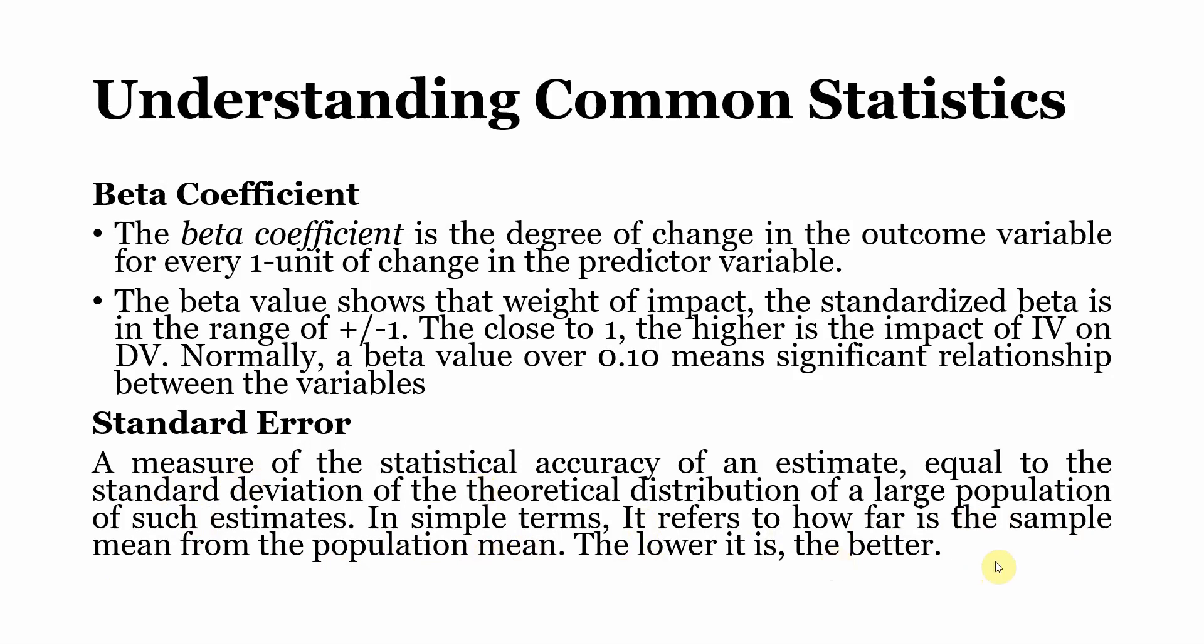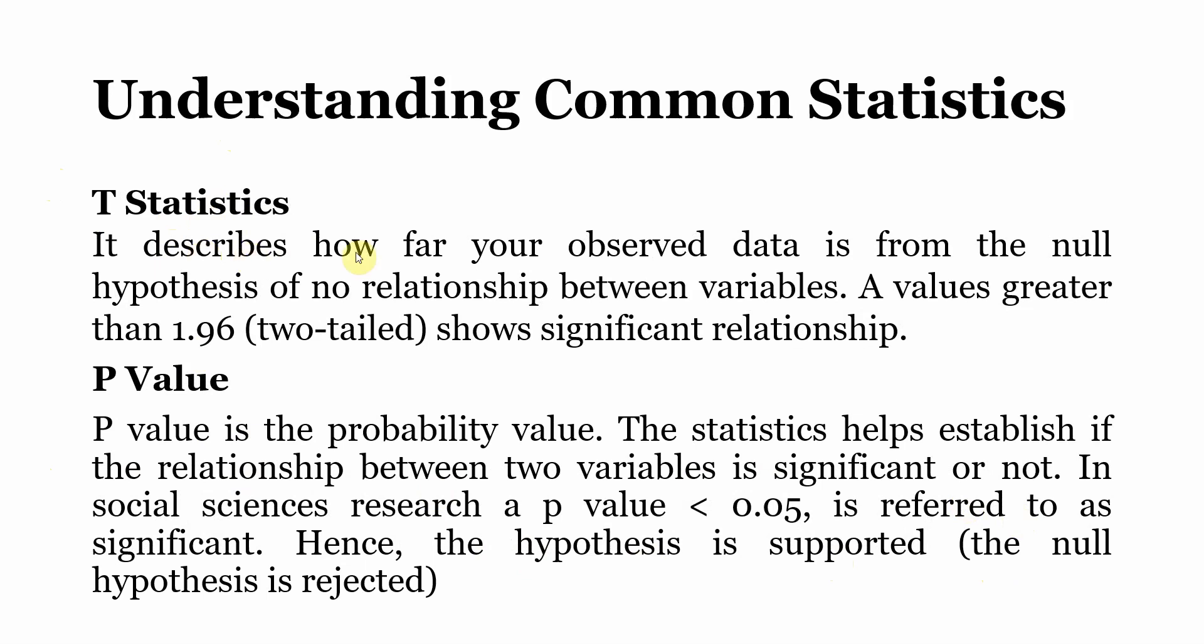Now if you divide your beta coefficient by your standard error, you will get your t statistics. And t statistics describe how far your observed data is from the null hypothesis of no relationship. Now a value of greater than 1.96 will mean that there is a significant relationship between the two variables and your null hypothesis is rejected.